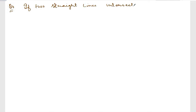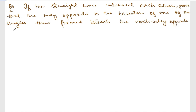We are doing exercise 6.2, question number 4. The question says: if two straight lines intersect each other, prove that the ray opposite to the bisector of one of the angles thus formed bisects the vertically opposite angle.